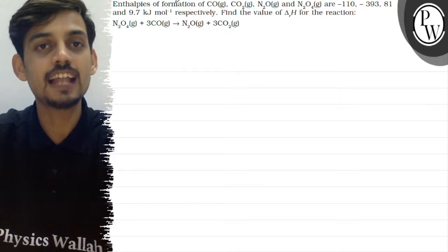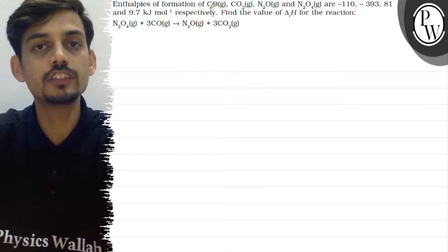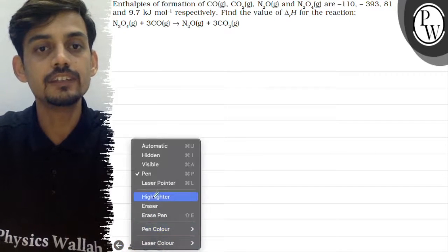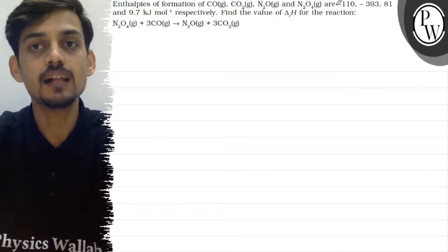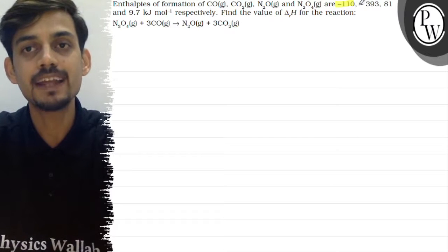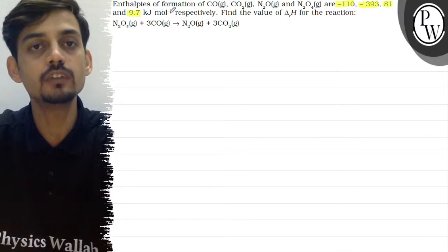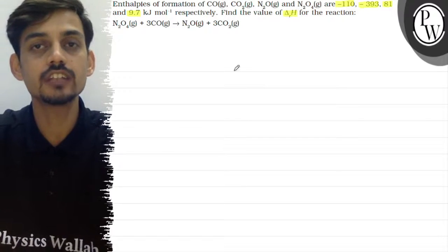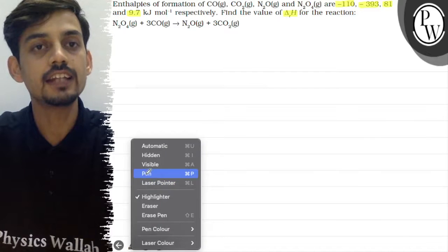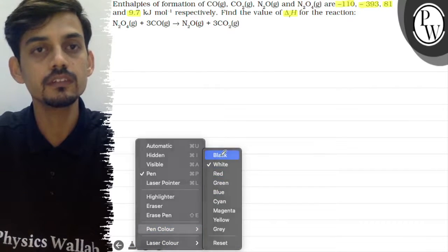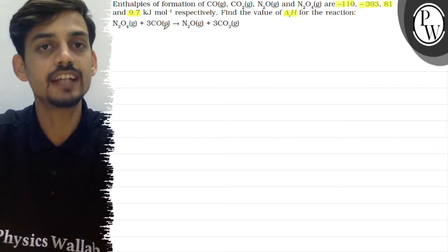The question gives the enthalpy of formation of CO, CO₂, N₂O, and N₂O₄ gas as minus 110, minus 393, 81, and 9.7 kilojoule per mole respectively. We need to find the value of delta H reaction for the reaction: N₂O₄ (g) + 3CO (g) → N₂O (g) + 3CO₂ (g).